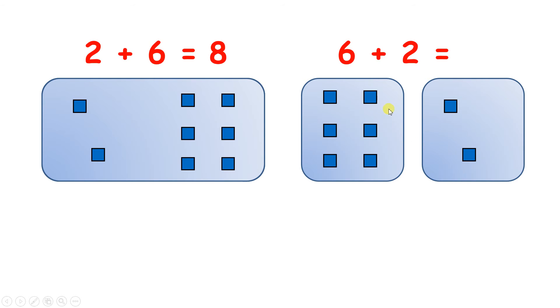Again if we want to know the total number of blocks we can count them all up together. And you can see that I have one, two, three, four, five, six, seven, eight. So two add six equals eight.